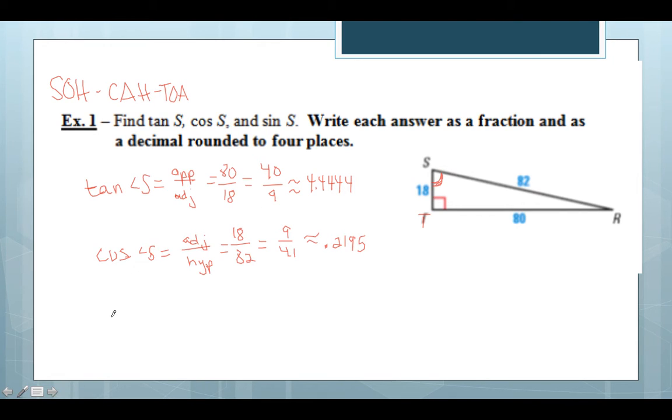And finally we're going to do the same thing for sine of angle S. So sine is the SO part of SOH-CAH-TOA: opposite over hypotenuse. And opposite of angle S once again is 80 and the hypotenuse is 82. So we're comparing 80 to 82 which reduces to be 40/41 or approximately 0.9756. So we're just looking at how these different side lengths compare to one another here.